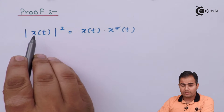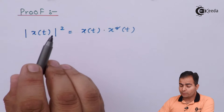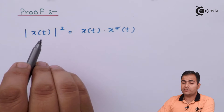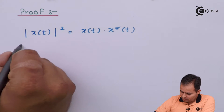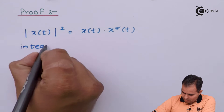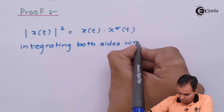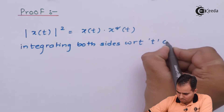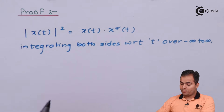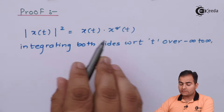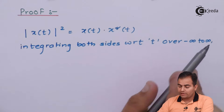Now I will integrate both sides with respect to t over the range from minus infinity to infinity.